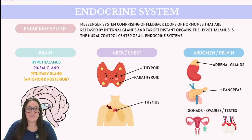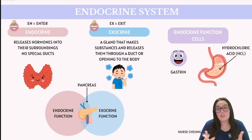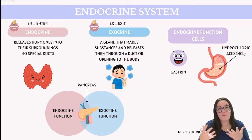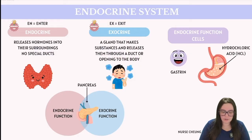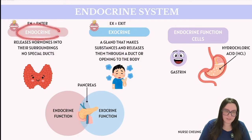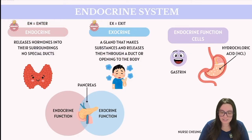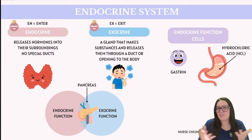And lastly, we have our gonads, which are the reproductive glands. We can have ovaries in females and we have testes in males. So let's highlight two key points when we discuss these different kinds of glands. Firstly, our focus here is going to be primarily on the endocrine function of these glands, not the exocrine function.